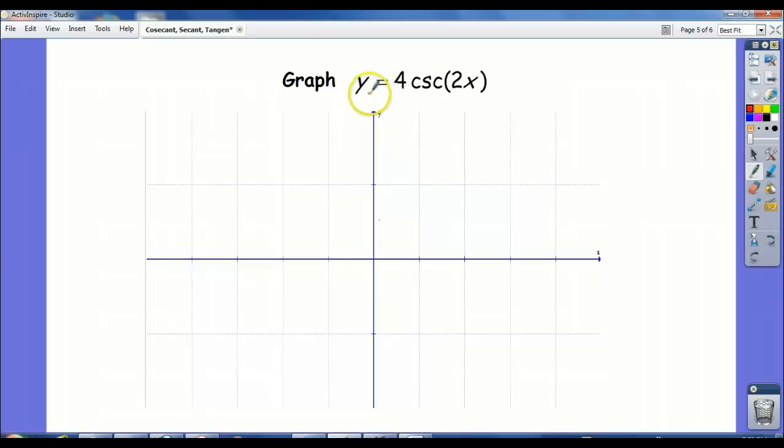So for instance, if we have to graph y equals 4 cosecant of 2x, I think the best way to do it is first graph, and I want to write lightly graph, y equals 4 sine of 2x, and then once we have that picture in front of us, it will be very easy to get the cosecant graph.